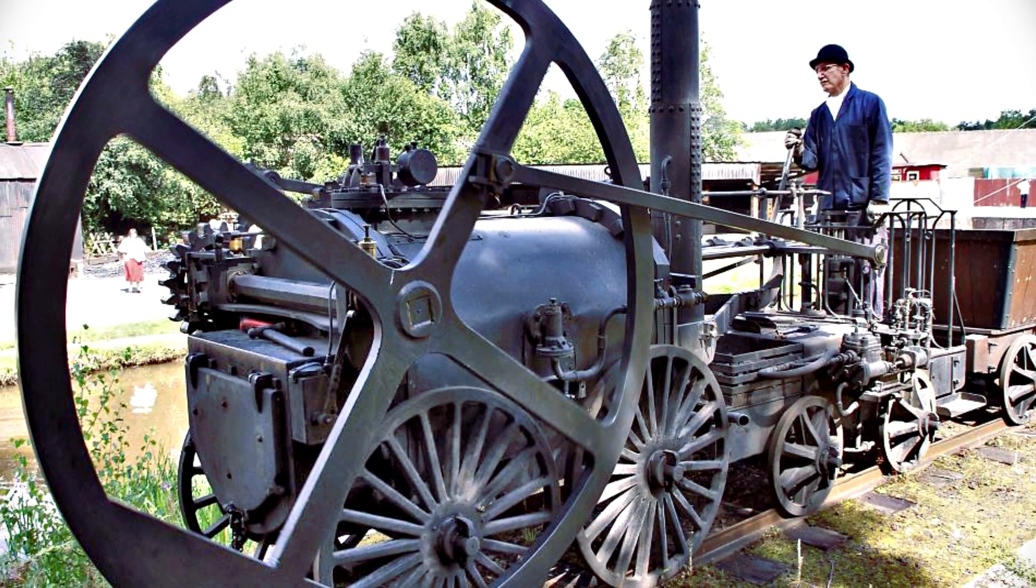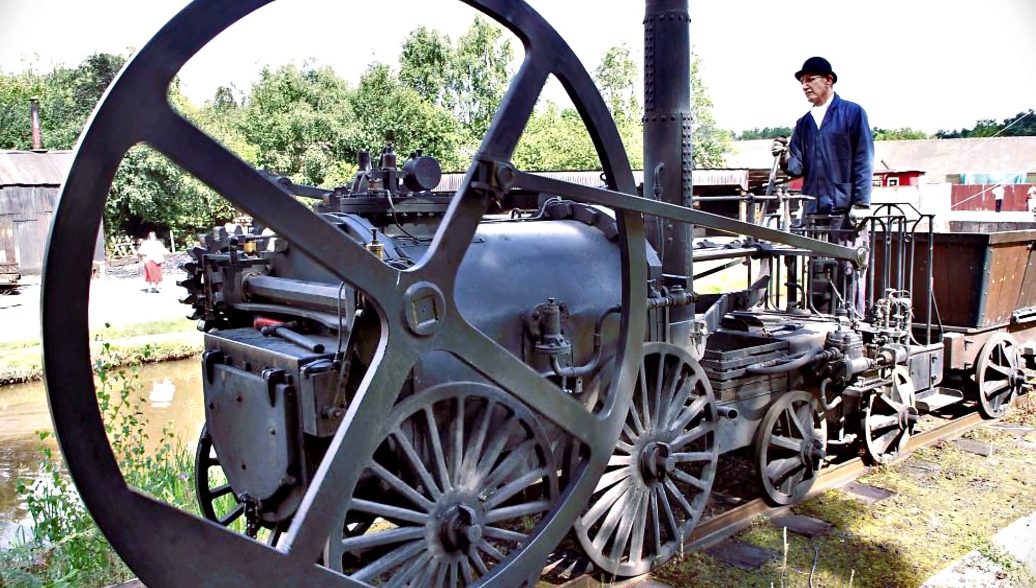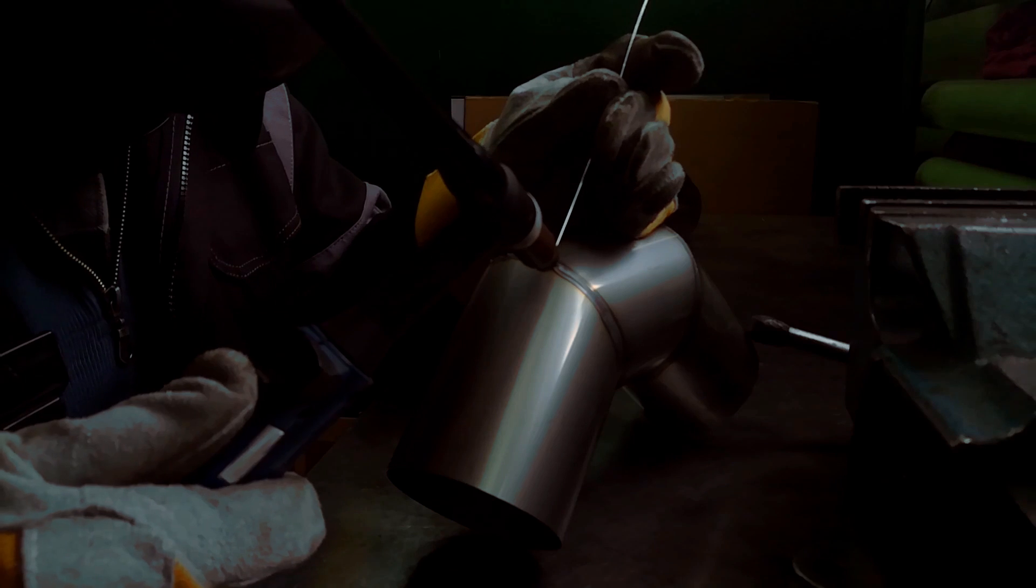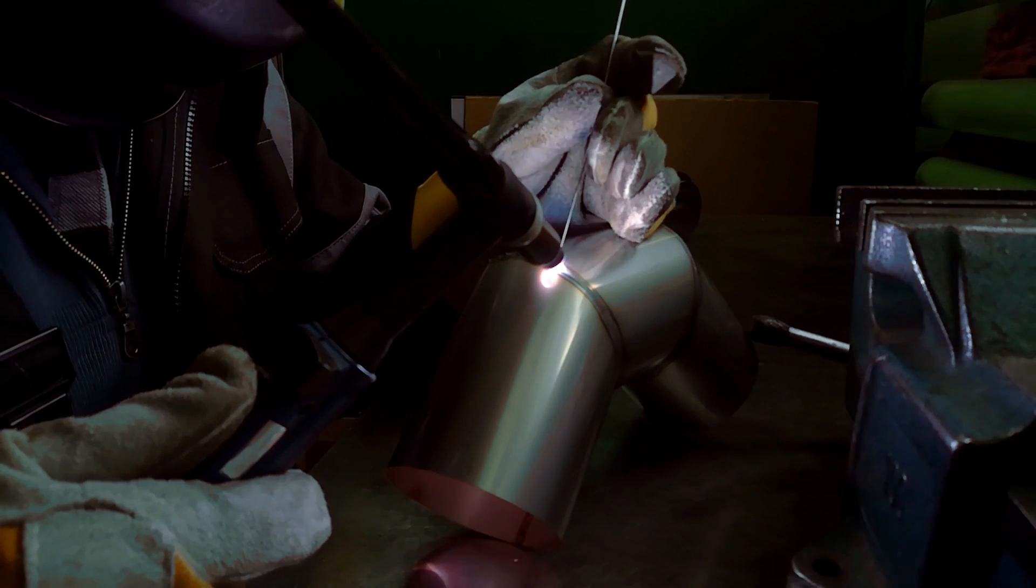The cast iron flywheels used on early steam engines were far too weak for higher RPM use. Better performing alloys made of titanium, magnesium, aluminum, and steel were developed offering up to 20 times more tensile strength.